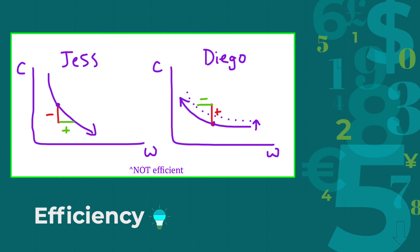Let's say Jess and Diego meet up, and Jess agrees to give up some of her corn in order to get some more wheat, and Diego gives up some wheat for more corn. This trade doesn't affect Jess, since she stays on the same indifference curve, but it benefits Diego since it moves him to a higher indifference curve, the dotted line.